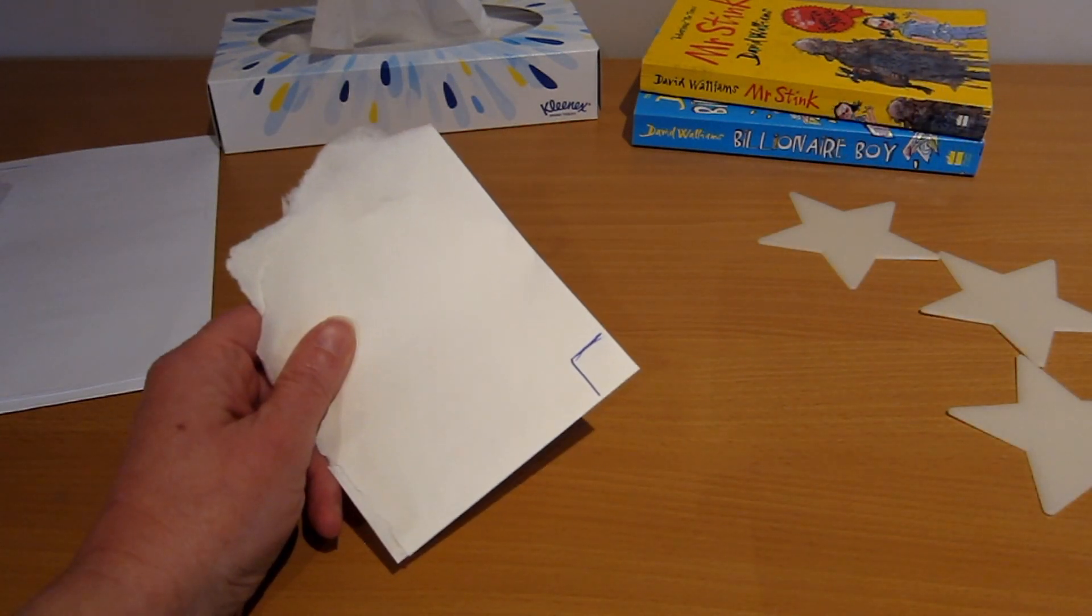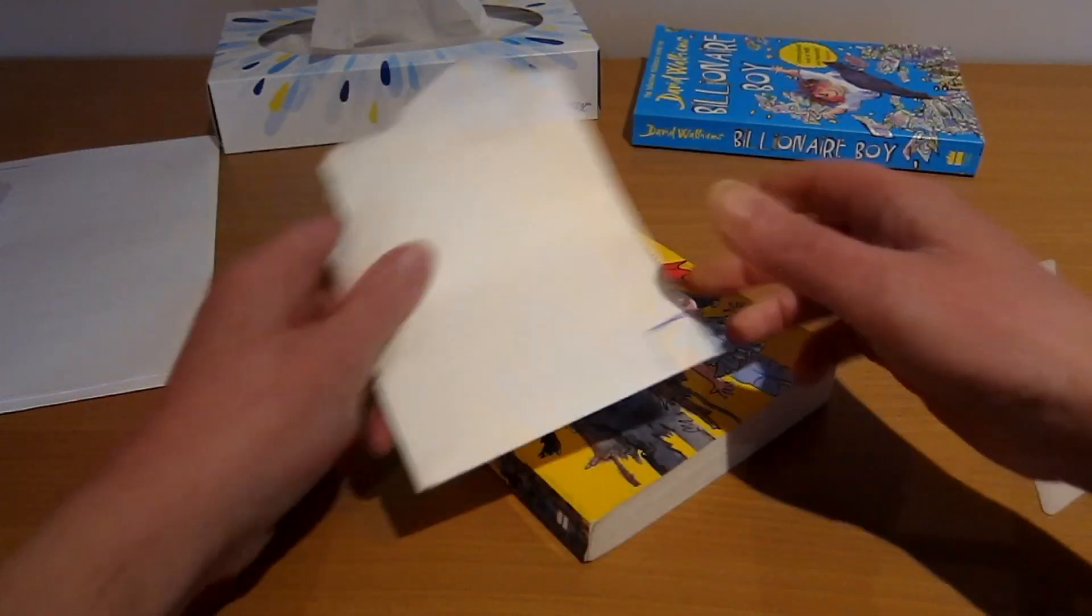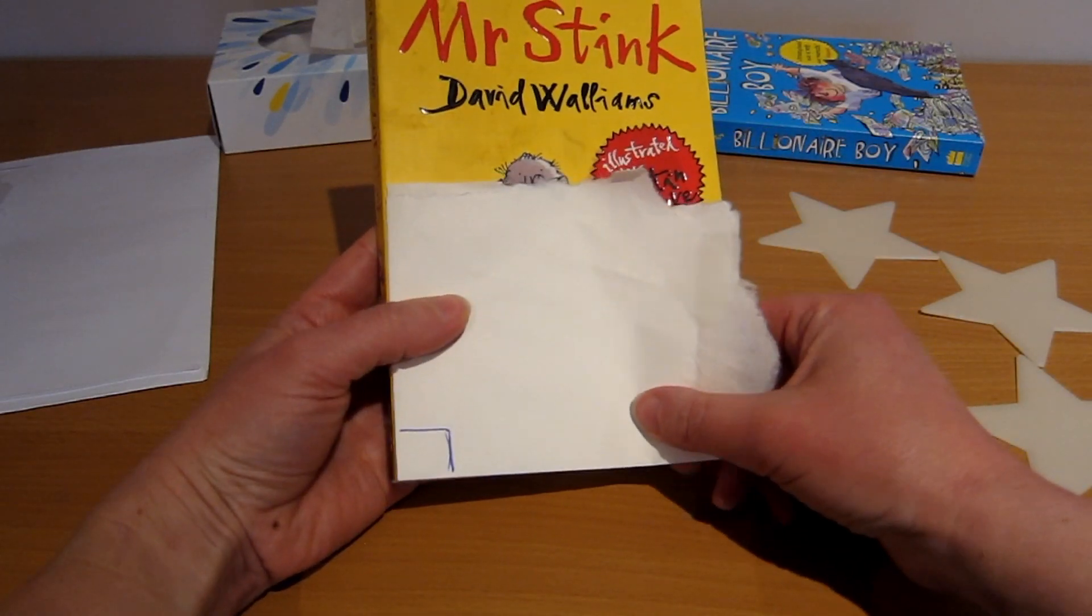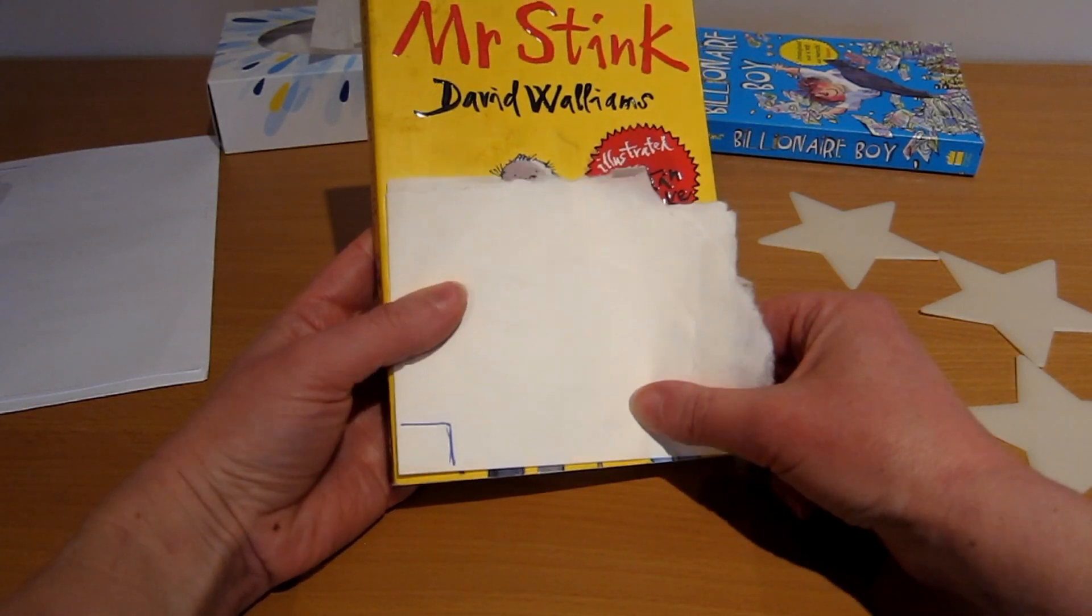Now we can see where the right angles are. Let's take this book. Let's take the corner of the book. Is it a right angle? Yes, that's a perfect right angle.